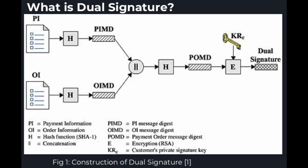What is Secure Electronic Transaction (SET)? These are a set of security protocols and formats to be followed while conducting secure credit transactions. It uses dual signature. The purpose of the dual signature is to link two messages that are intended for two different recipients.